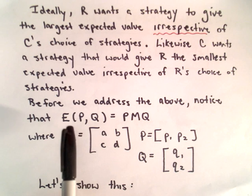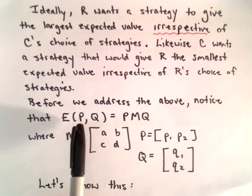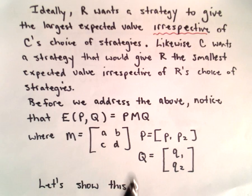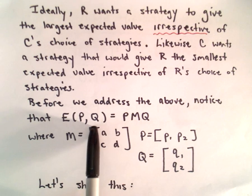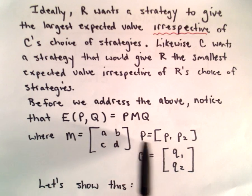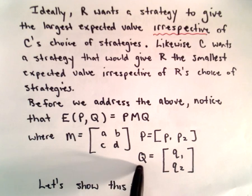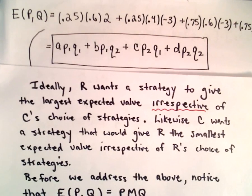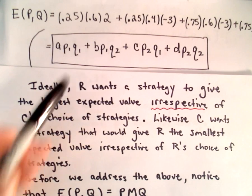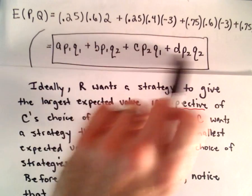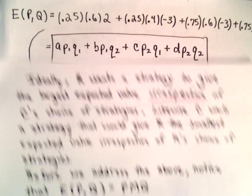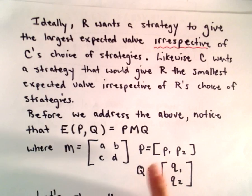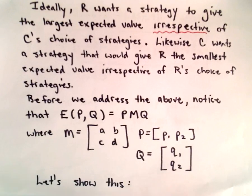One thing I want to show real quick: the expected value using the strategies in P and Q, we can actually compute this expected value simply by taking the matrix P times the matrix M times the matrix Q. And when we computed the expected value previously, we came up with this formula. So I just want to show that in fact we still do get that same formula if we take P times M times Q.